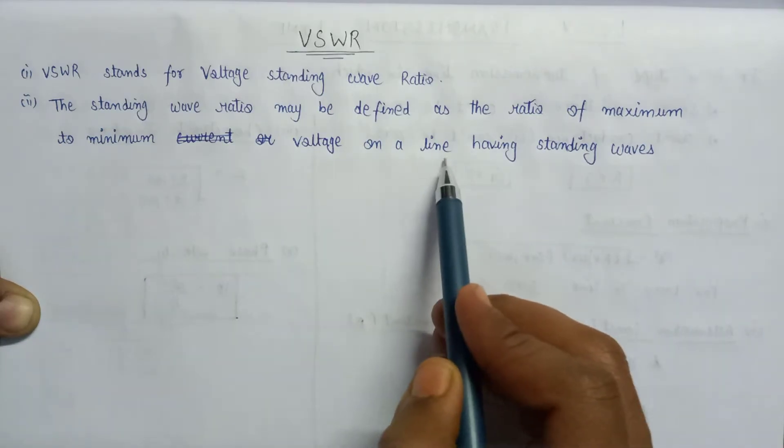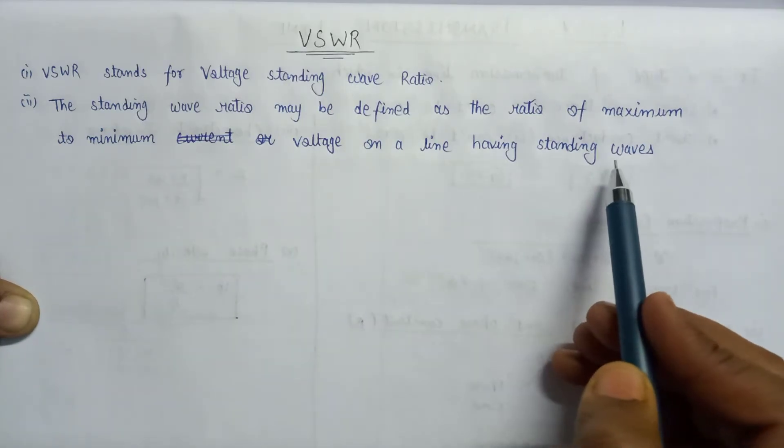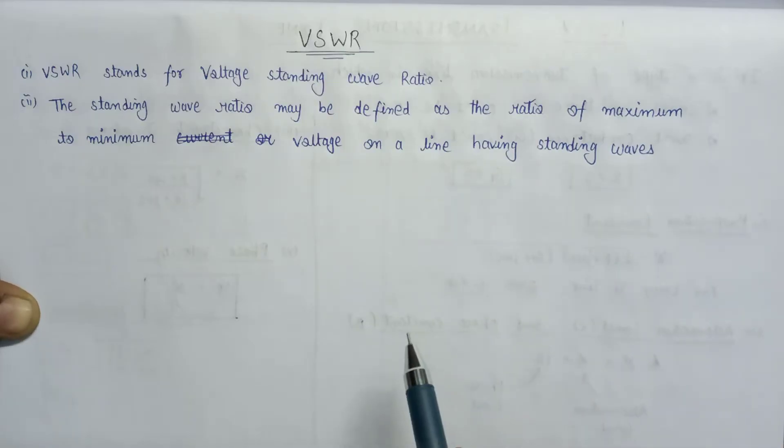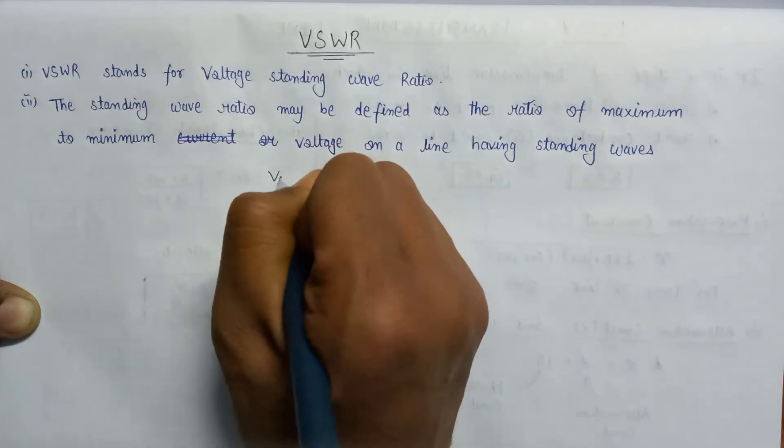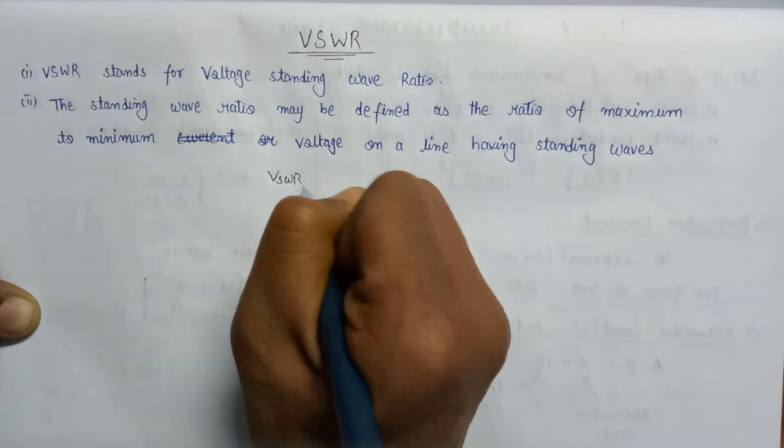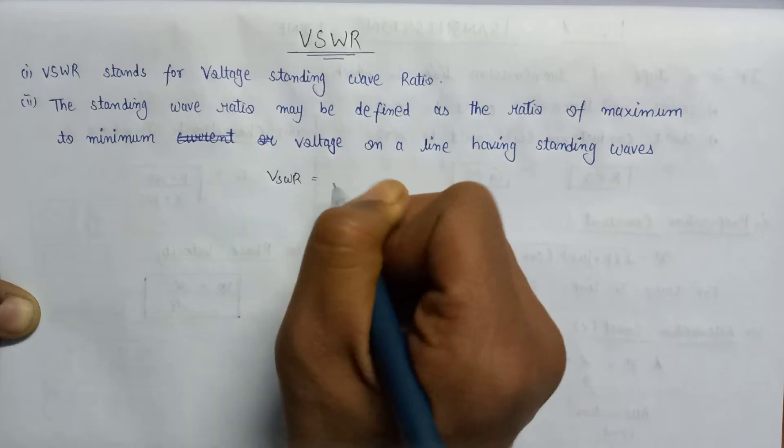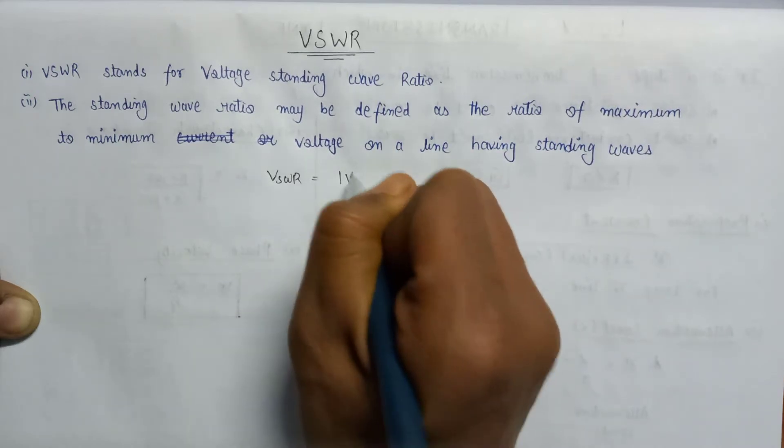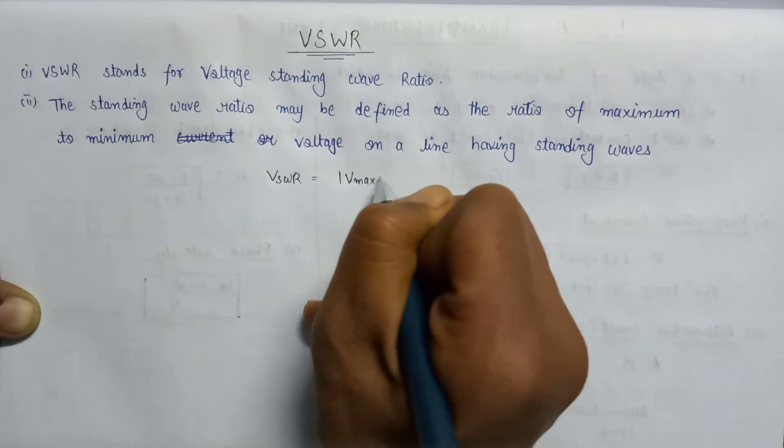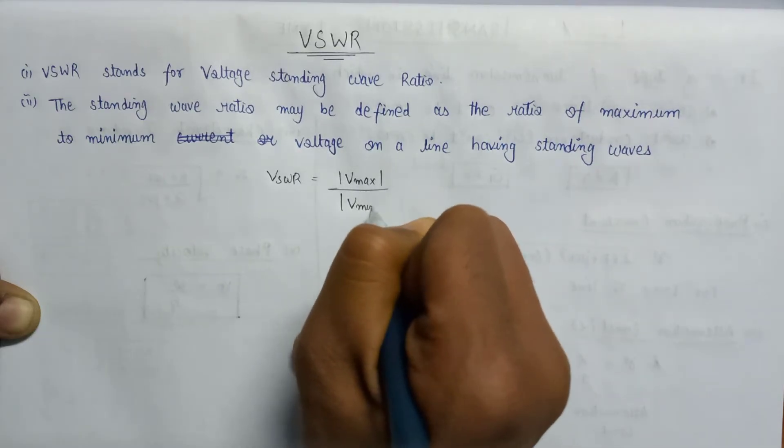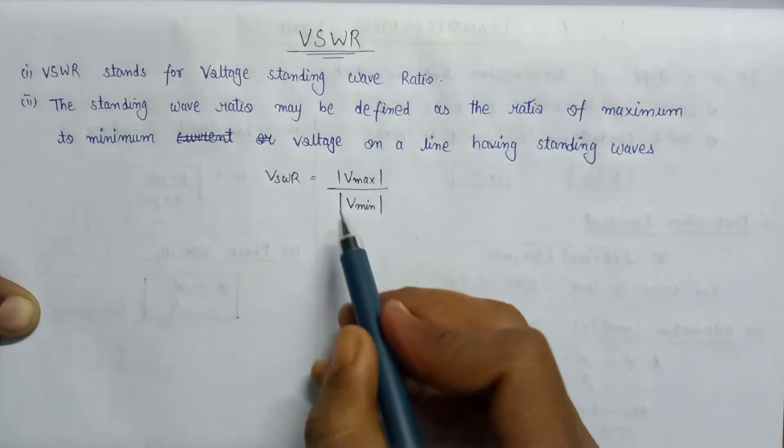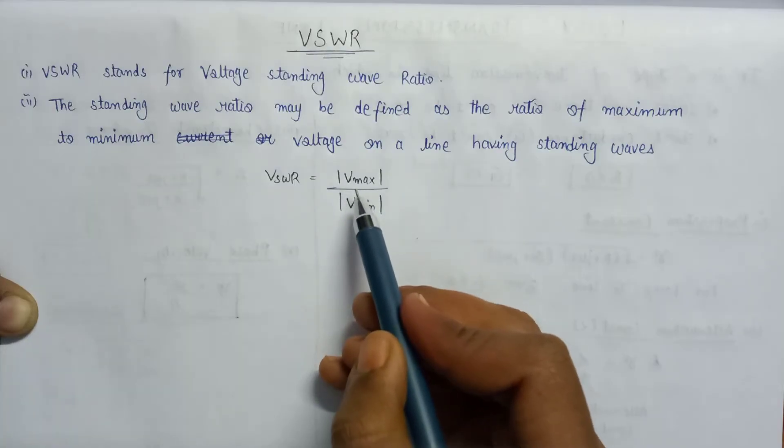So if we write an expression for the VSWR, then VSWR will be equals to mod of V max to mod of V minimum, where V max is the maximum voltage and V minimum is the minimum voltage.